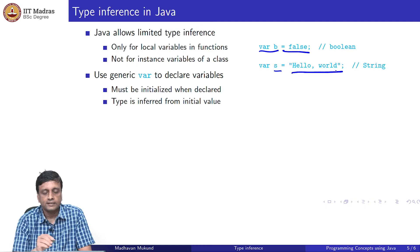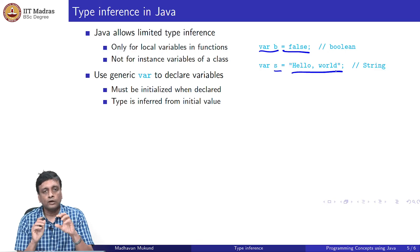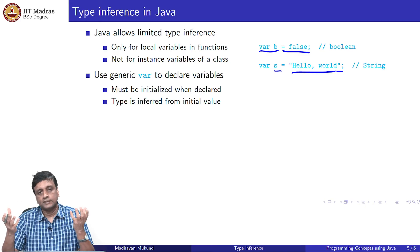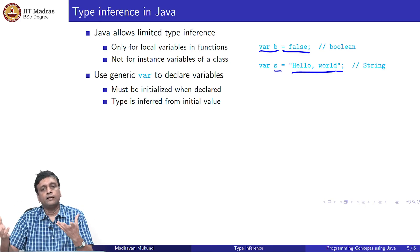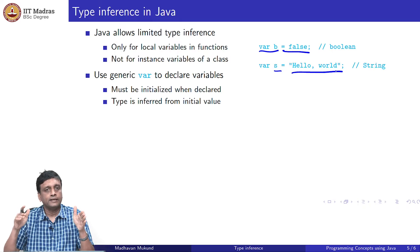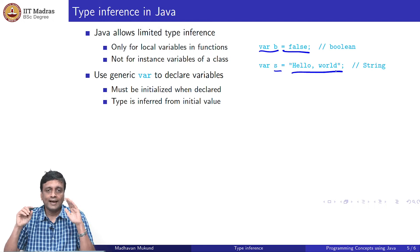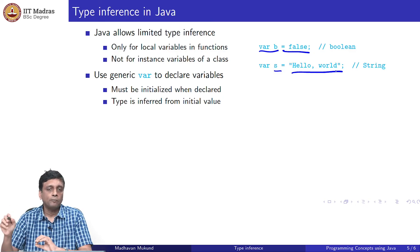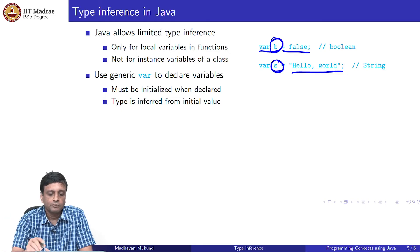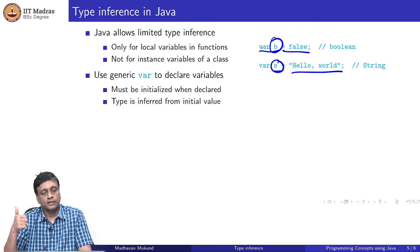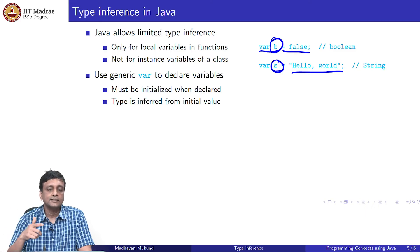Similarly, if I take var s and initialize it to a string constant, then s must be a string. Java's approach is limited: when you create a variable and initialize it at the time of declaration, I can figure out the type from that initial value. So if you do not want to tell me the type, I will copy the type from the initialized value to the variable — s becomes a String and b becomes Boolean. The rule is: it must be a local variable inside a function and must be initialized at the time of declaration, then you can say var.